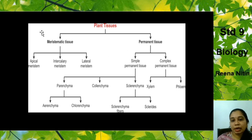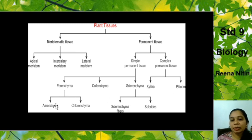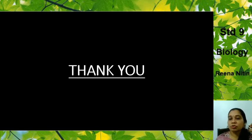Here is a summary of plant tissues. Plant tissues are mainly two types: meristematic tissue and permanent tissue. Under meristematic tissue we have apical meristem, intercalary meristem, and lateral meristem. Under permanent tissue we have simple tissues — parenchyma, colenchyma, sclerenchyma — and complex tissues which are the xylem and the phloem. Thank you so much. Please do the assignment and the question and answers for this chapter.